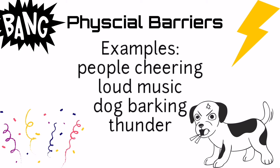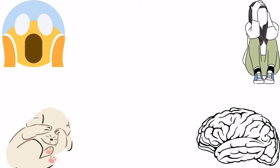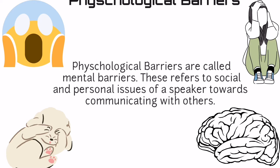Examples of physical barriers: people cheering, loud music, dog barking, and thunder. Now let's talk about the psychological barriers.